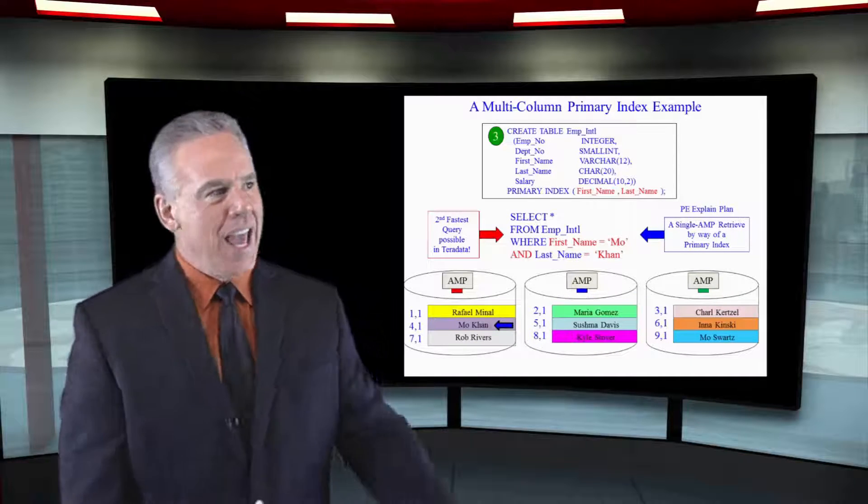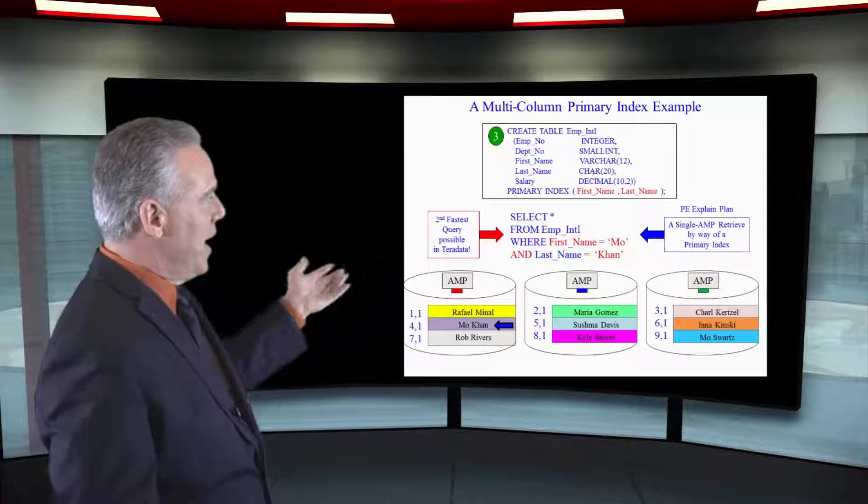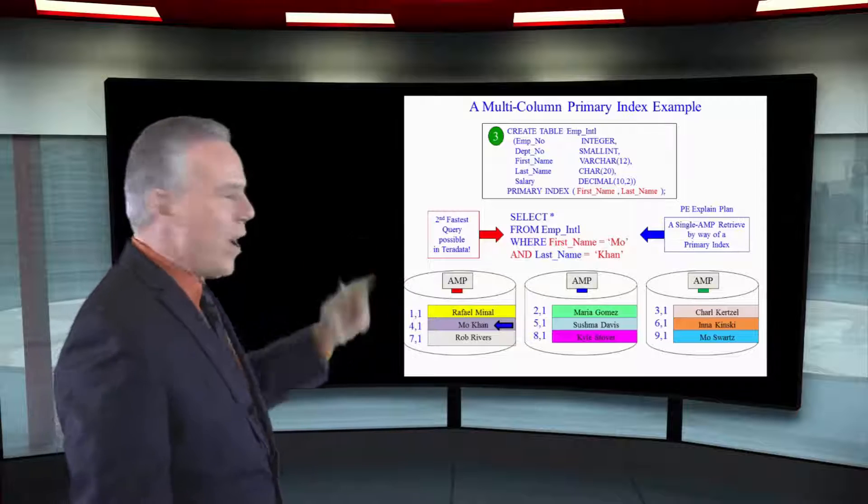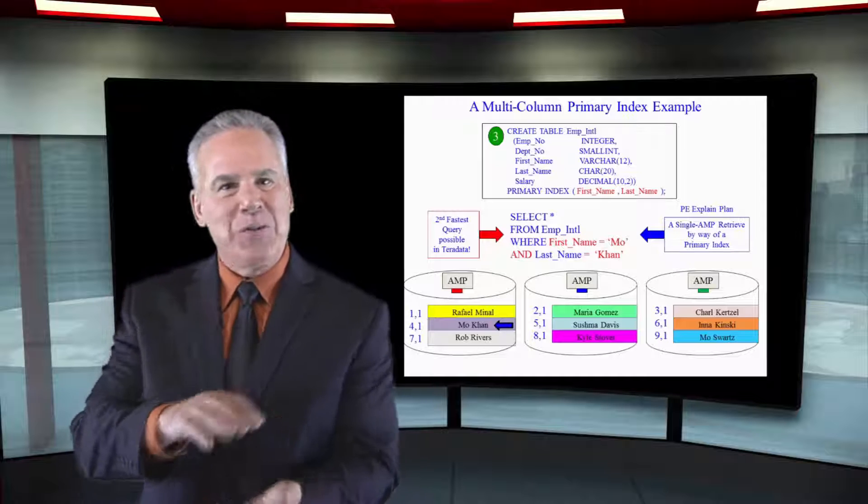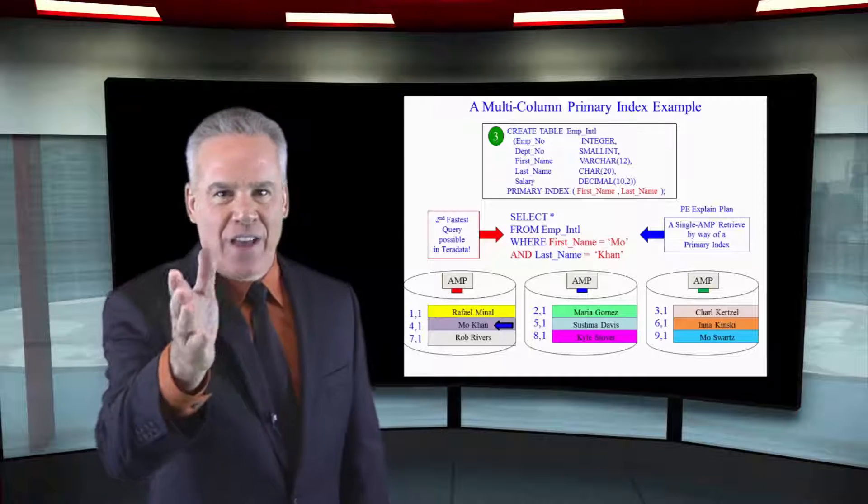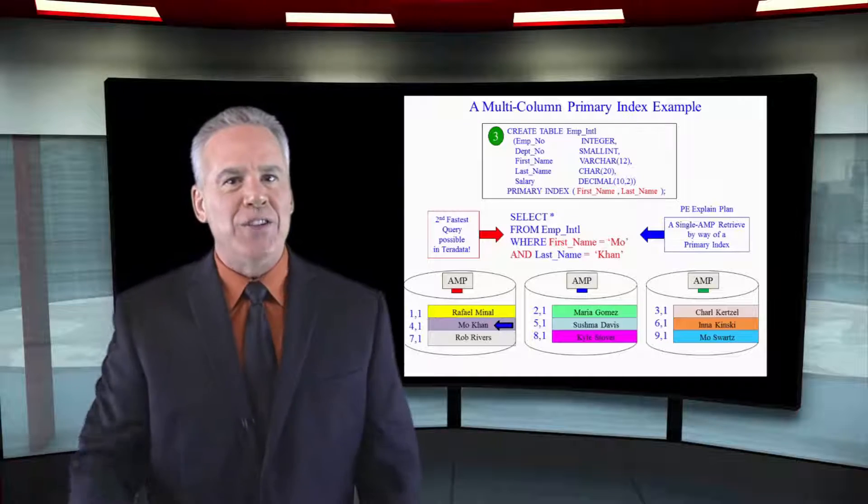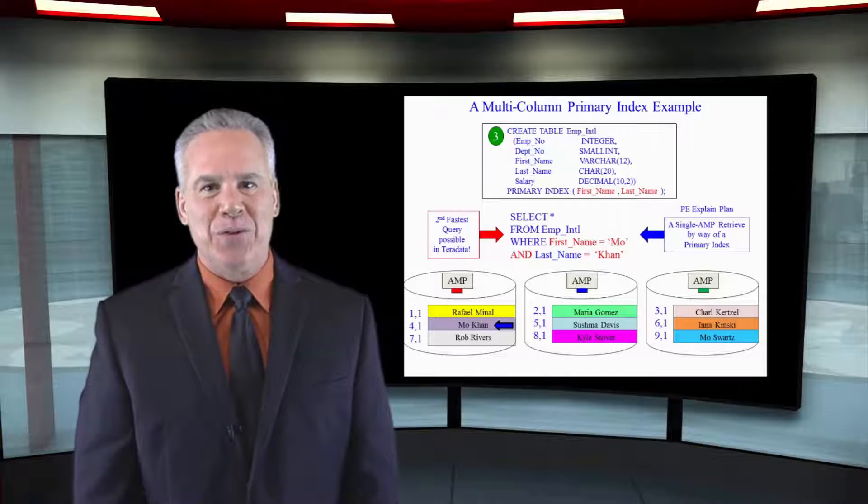Teradata doesn't mind if you have a multi-column primary index and if you use both the first name and the last name in your WHERE and AND clause, it's going to be one second and a few rows may come back. You can count on that, so do not hesitate to do this if you need good distribution.